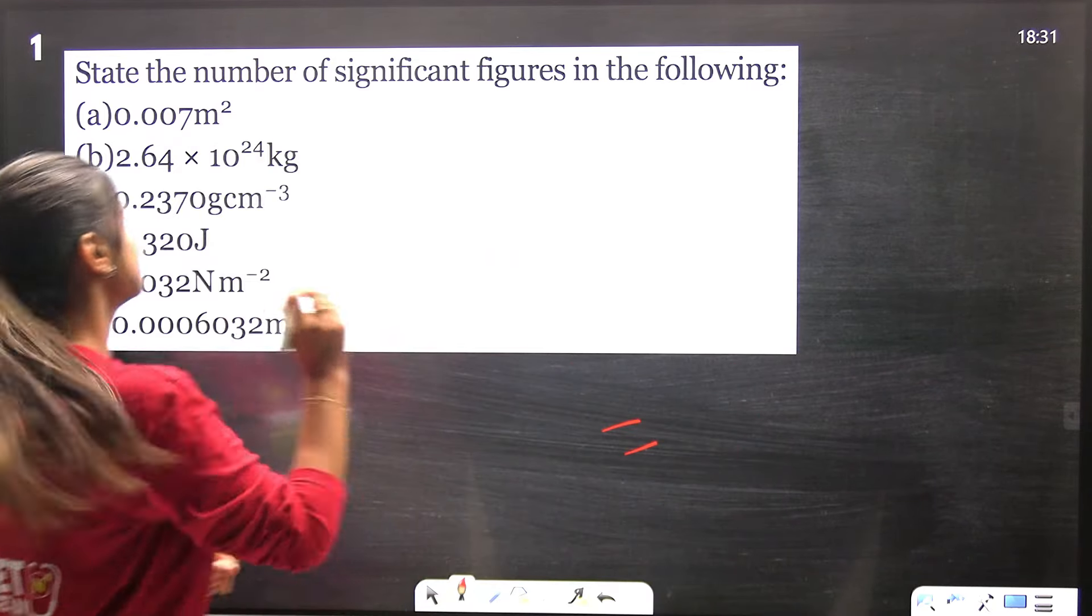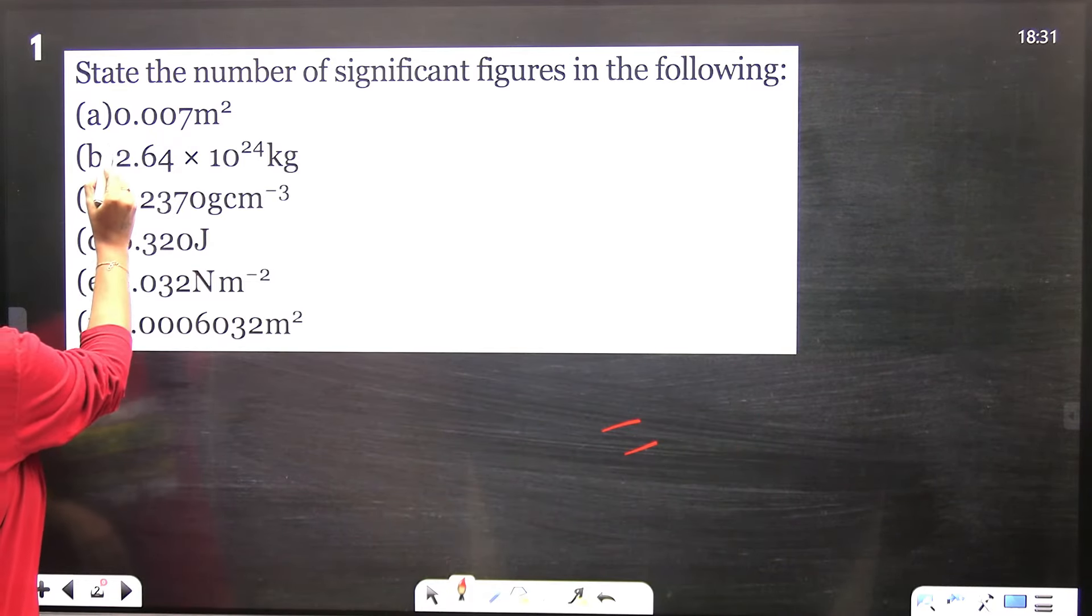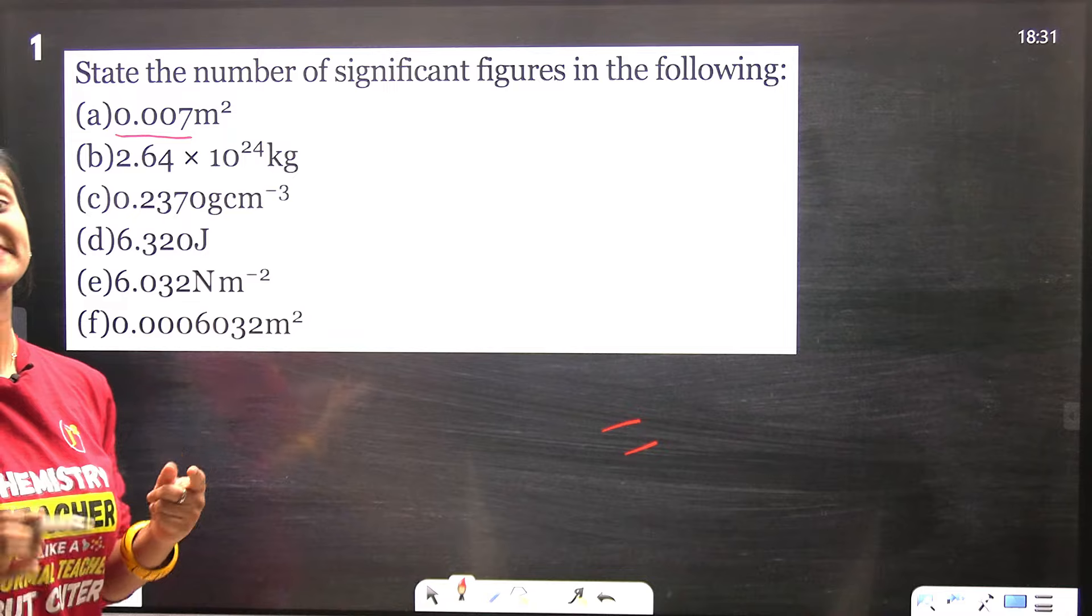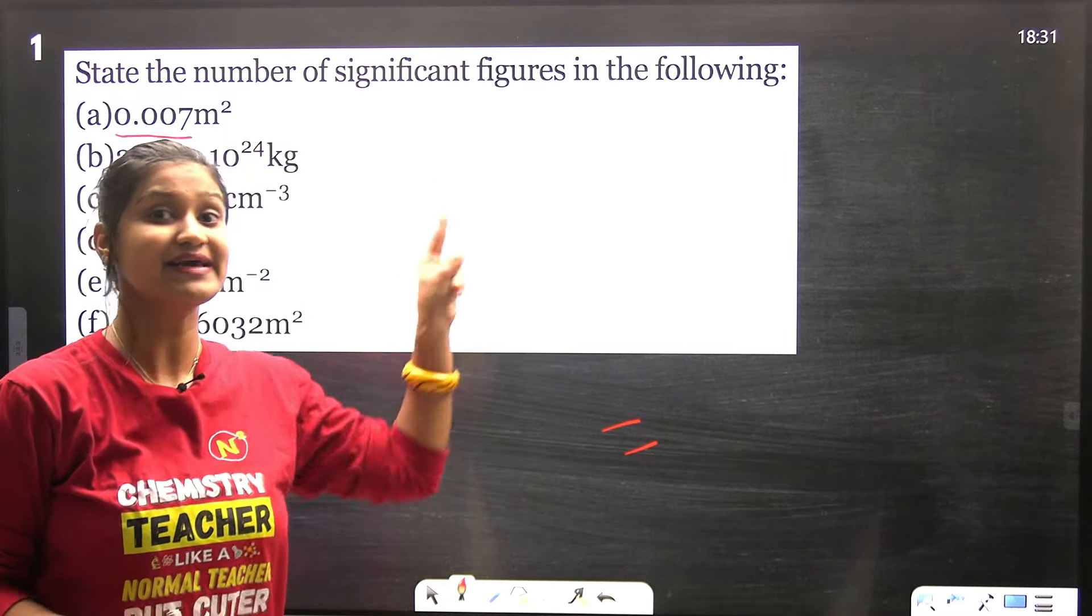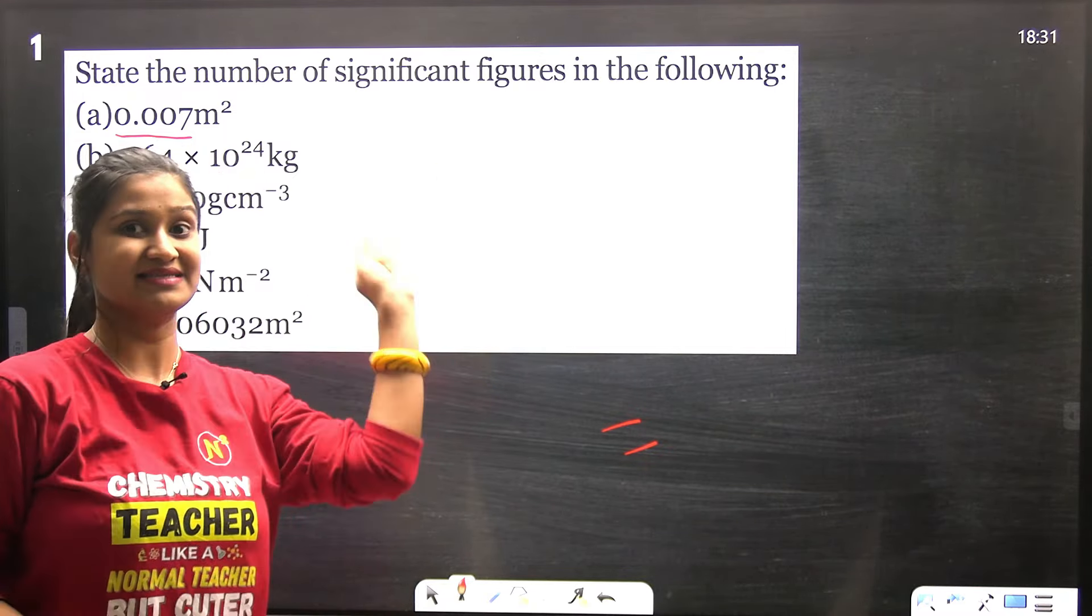We understand zeros with examples. Trailing zeros after the decimal are significant. How do we understand this? 0.007 - here the zeros are not trailing, they're not ending zeros after the decimal.